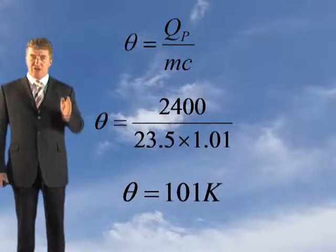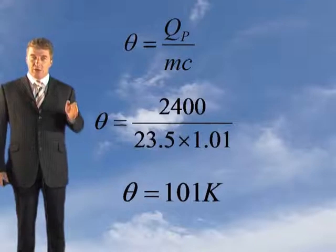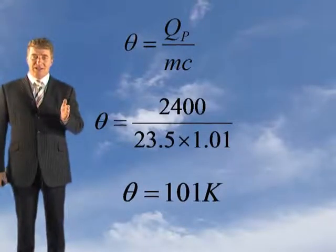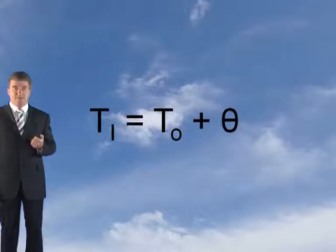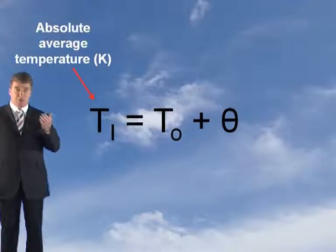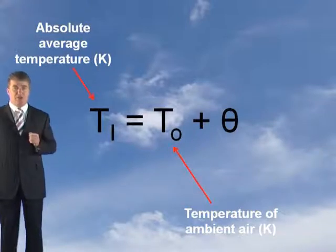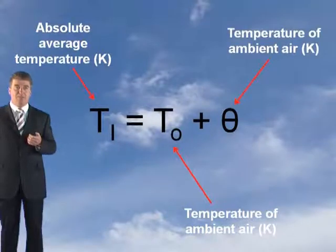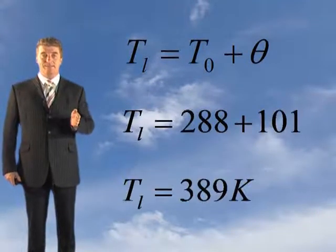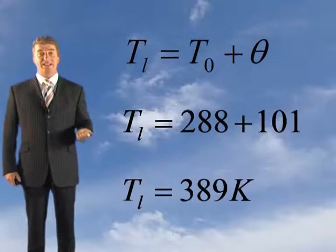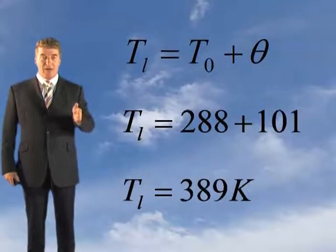101K — this is hot enough to ensure that the smoke has sufficient buoyancy, but not too hot for the life safety requirements. 200 degrees C is the critical temperature for life safety. We know the temperature increase, but how hot is the smoke? You use: TL equals TO plus theta, where TL is your absolute average temperature, TO is the ambient temperature generally taken as 288K, and theta is your temperature increase. Evaluating it gives a smoke temperature of 389K. And since 200 degrees C is the tenability limit, this is way below that — this is tenable. That covers step four.